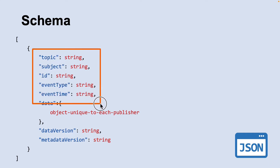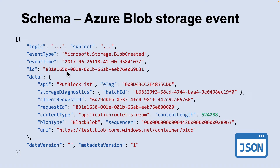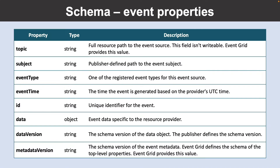Events consist of a set of five required string properties and a required data object. The properties are common to all events from any publisher. This code example shows the specific implementation of an event related to Azure Blob Storage. All events have the same top-level data. For custom topics, the event publisher determines the data object, and the top-level data should have the same fields as standard resource-defined events.